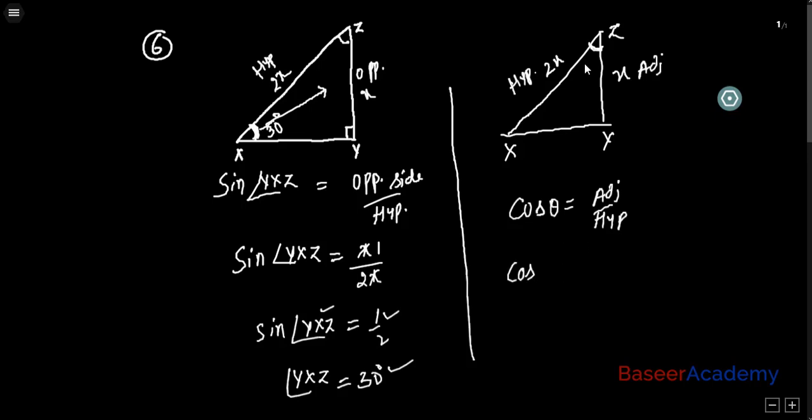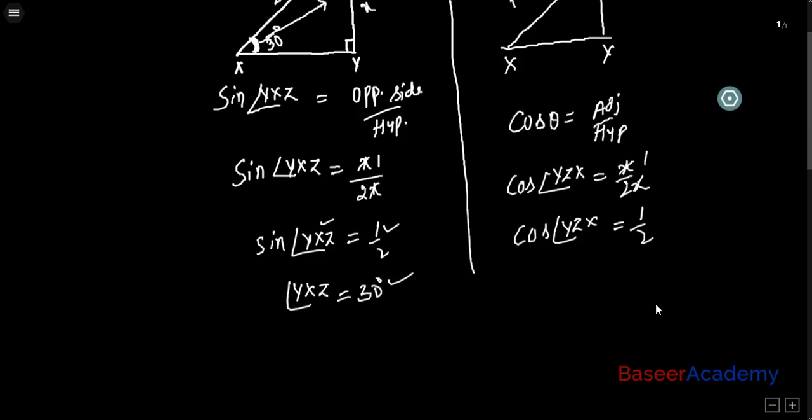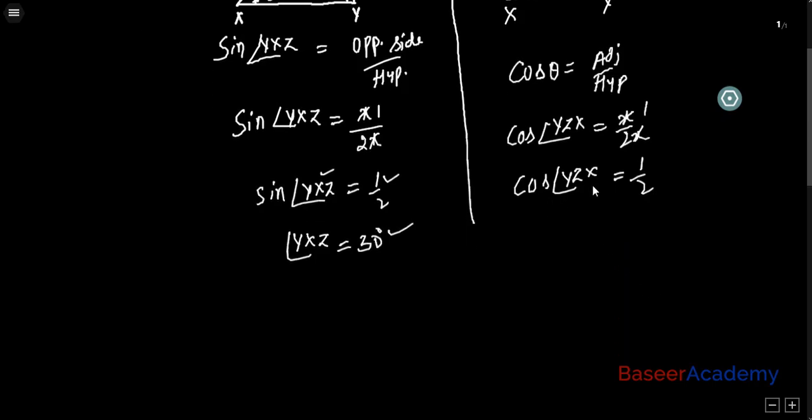Cos of angle YZX: adjacent side is X, hypotenuse is 2X. Cos of angle YZX equals 1 by 2. When do we get the value of cos as 1 by 2? When the angle is 60 degrees. Cos 60 degrees is 1 by 2.